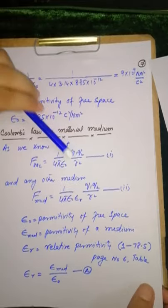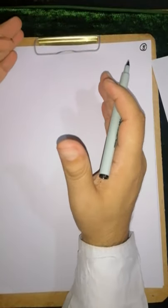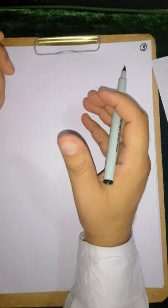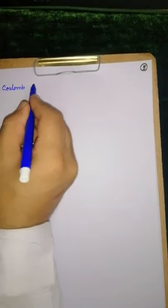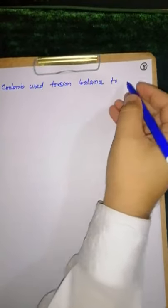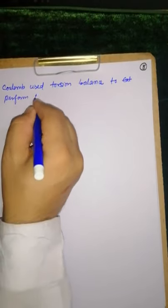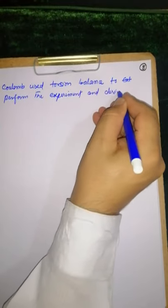In the experiment, the original experiment - I will give you an idea of what was done. Coulomb performed the experiment. Coulomb used torsion balance to calculate, to perform the experiment and derive Coulomb's law.